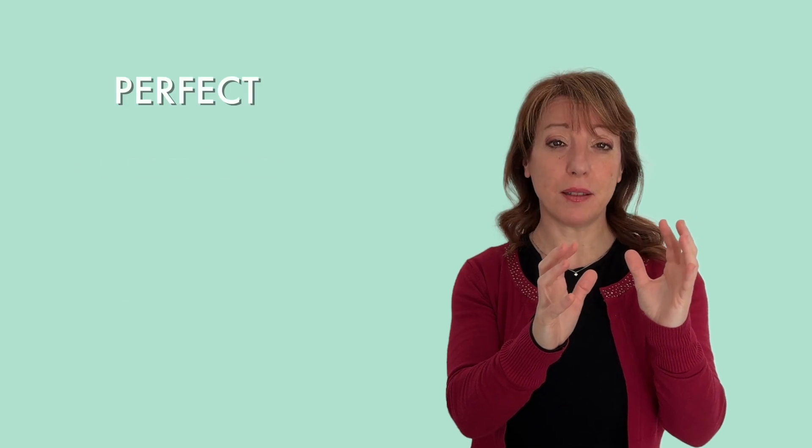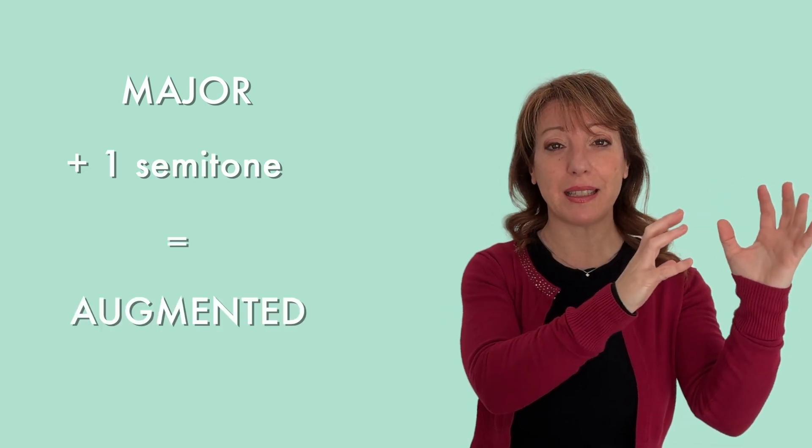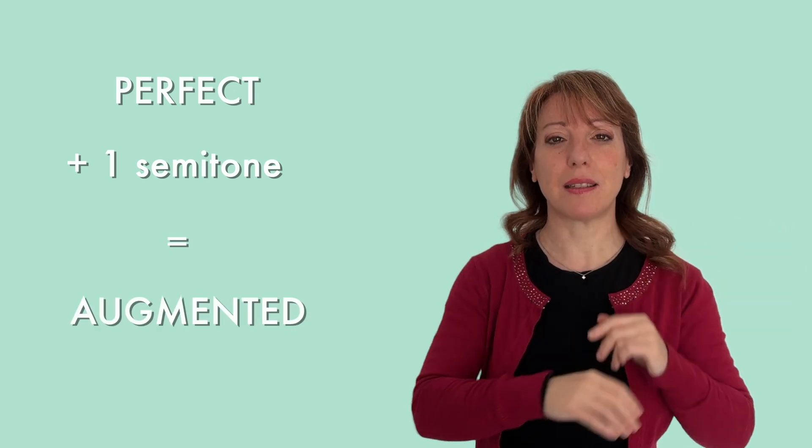A perfect interval, minus one semitone, becomes diminished. A major interval, plus one semitone, becomes augmented. A perfect interval, plus one semitone, becomes augmented. So you need to remember, augmented, augmented, minor, diminished. Easy peasy.